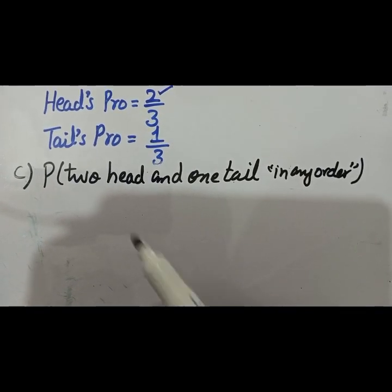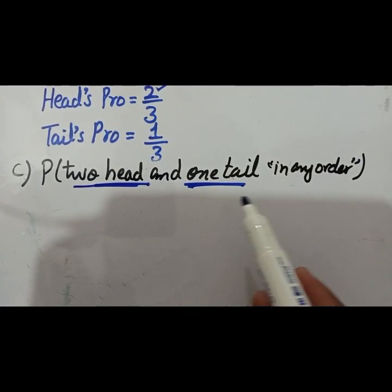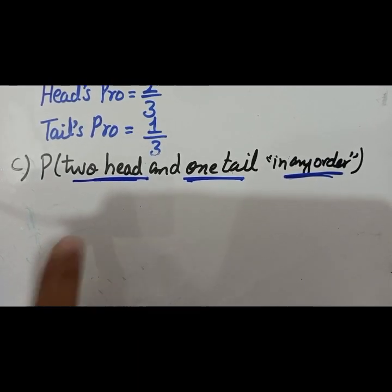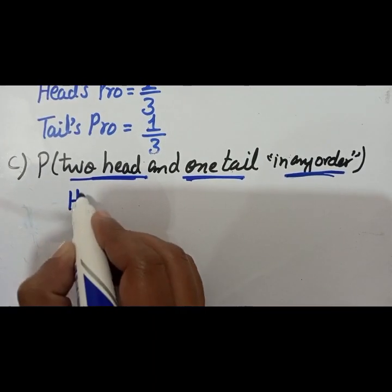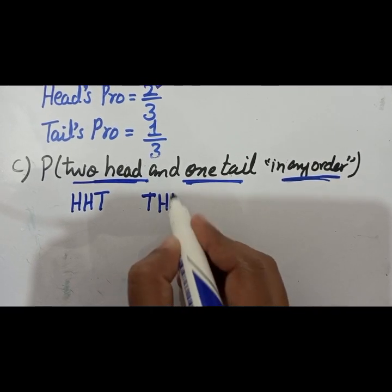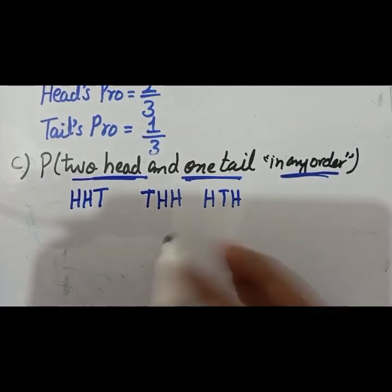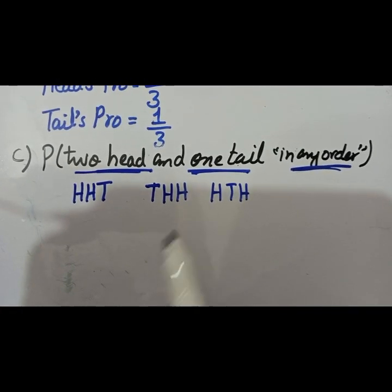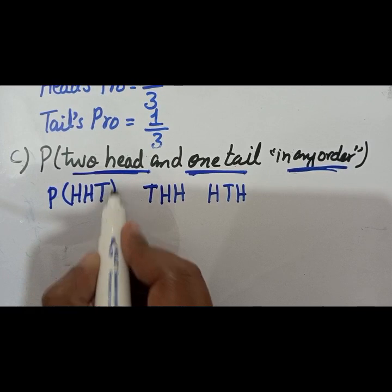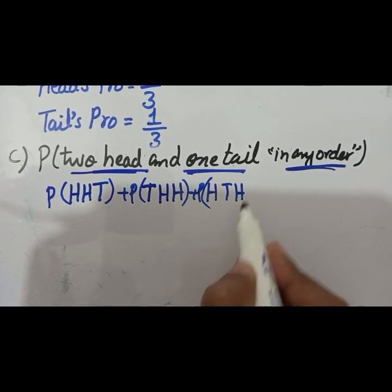Moving to part three: two heads and one tail in any order. You flip the coin three times and must get two heads and one tail, but in any order. The possible combinations are: head-head-tail, tail-head-head, or head-tail-head. In all three possibilities you have two heads and one tail. So the probability equals the probability of head-head-tail, plus the probability of tail-head-head, plus the probability of head-tail-head.